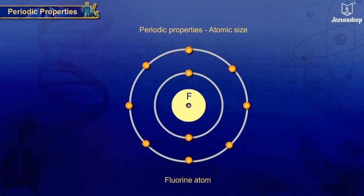Atomic size: the atomic size of an element depends on the atomic radius, which is the distance between the center of the atom and the outermost shell.